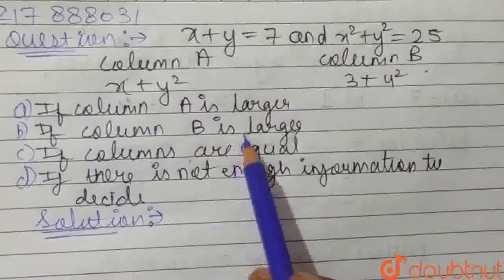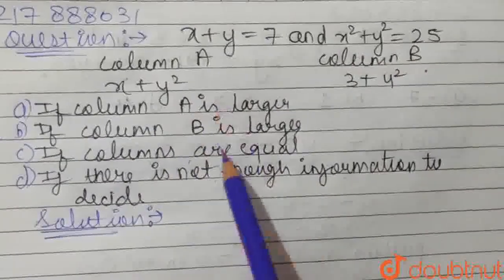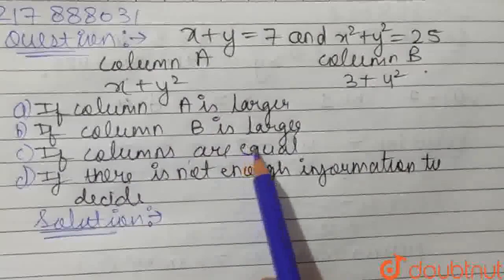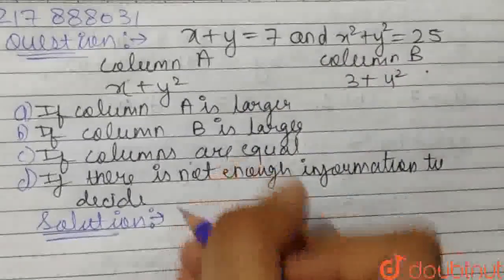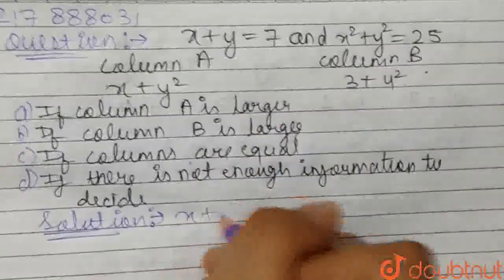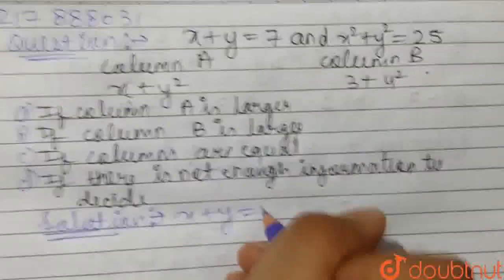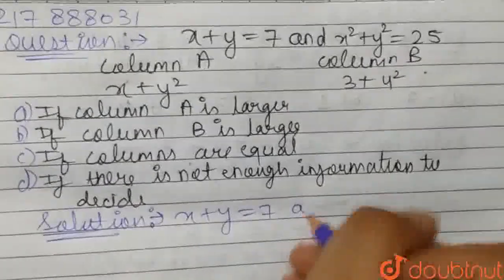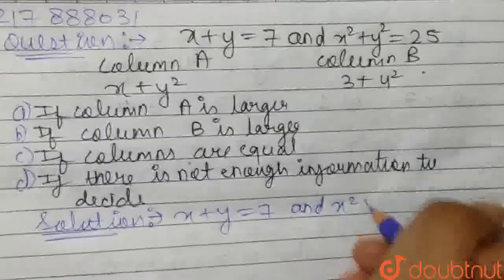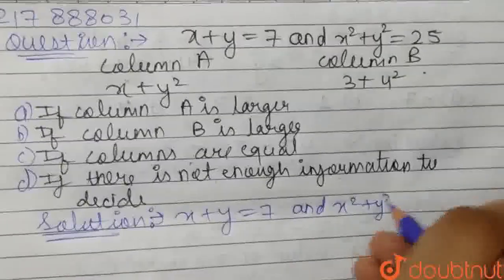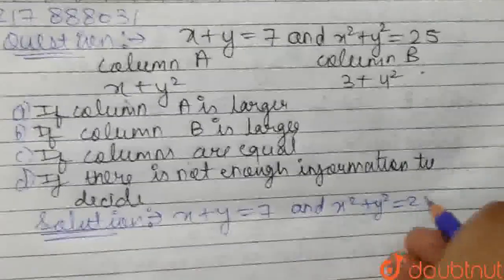We have to find which one of the four options is correct, and we have two equations. First, write x plus y equals 7, and x squared plus y squared equals 25.